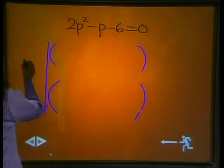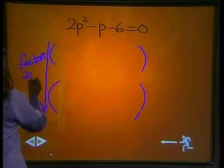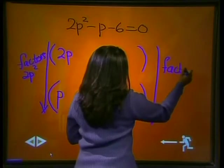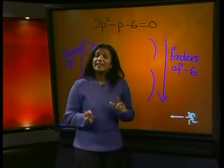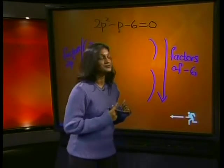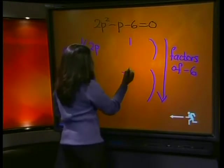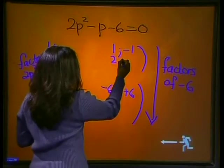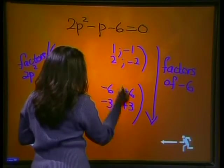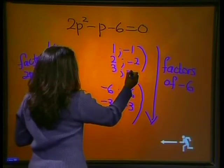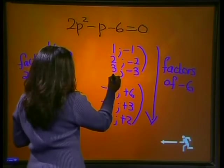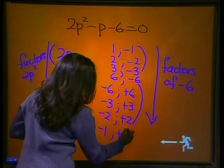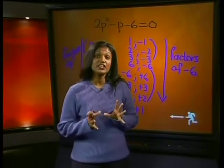On this side I will find the factors of 2p². I'll write 2p and p here. On this side we will work out the factors of -6. Now there are many possible factors of -6. Let's work them out now. It could be 1 × -6, -1 × 6, 2 × -3 or -2 × 3, 3 × -2 or -3 × 2, and 6 × -1, and our last set of factors, -6 × 1.